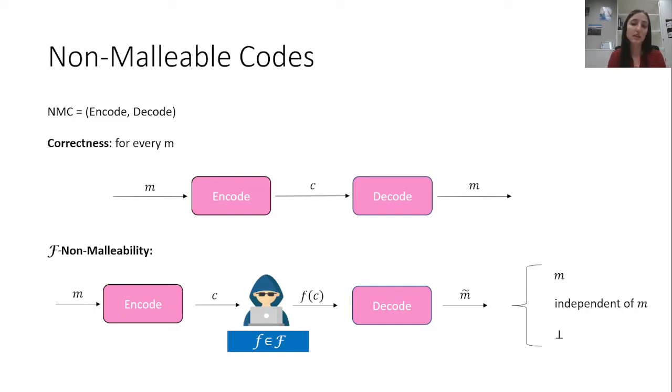then this tampered message should be either equal to the original one, or independent of it, or tampering should be detected, meaning that the decoding algorithm should return a special symbol ⊥.